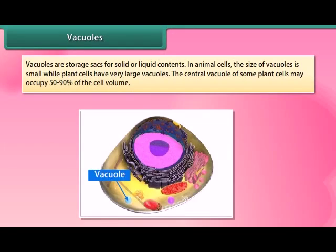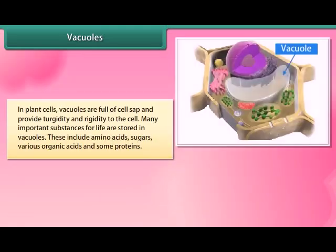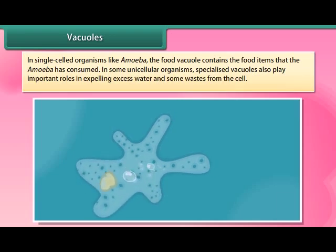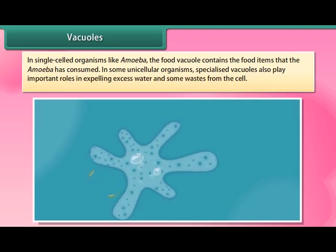Vacuoles are storage sacks for solid or liquid contents. In animal cells the size of vacuoles is small, while plant cells have very large vacuoles. The central vacuole of some plant cells may occupy 50 to 90 percent of the cell volume. In plant cells, vacuoles are full of cell sap and provide turgidity and rigidity to the cell. Many important substances are stored in vacuoles, including amino acids, sugars, various organic acids, and some proteins. In single-celled organisms like amoeba, the food vacuole contains consumed food items. In some unicellular organisms, specialized vacuoles also play important roles in expelling excess water and wastes from the cell.